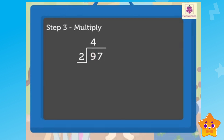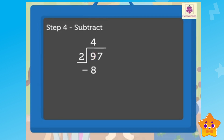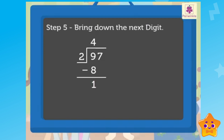Step three is to multiply four by two. As we know, four times two is equal to eight. We write the number eight in the tens column under nine. Step four is to subtract eight from nine, which is equal to one. We write this one in the tens column. Step five is to bring down the next digit, that is seven.